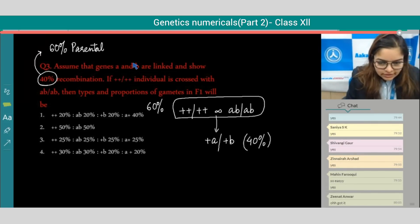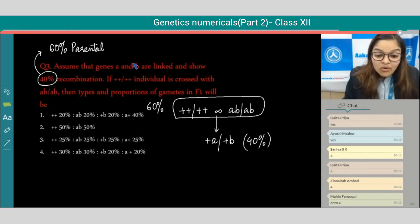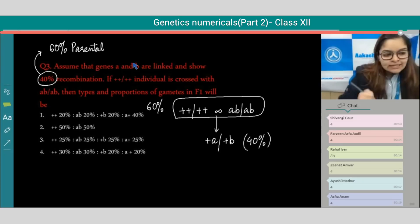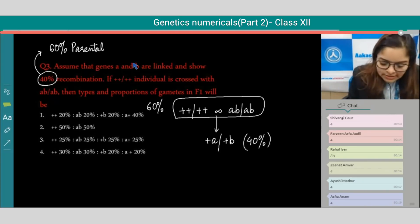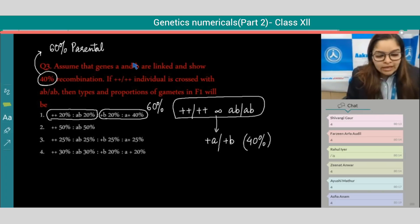Correct. Now can anyone tell me the correct option? Option 4 is right. But if I start with option one, this is wrong. Why? Because the parents are providing 40 percent - this is wrong. 20 and 20, 40 percent. The recombinants are providing 60 percent, so this will be wrong.